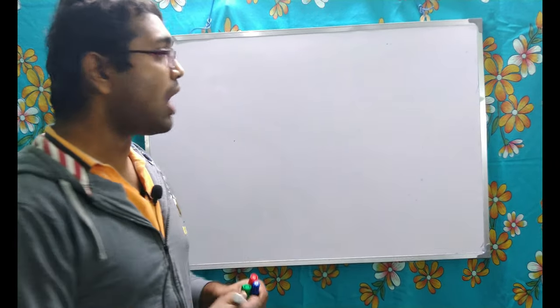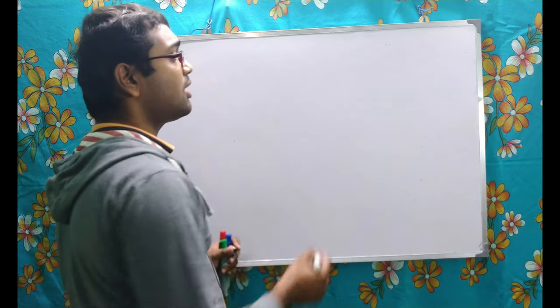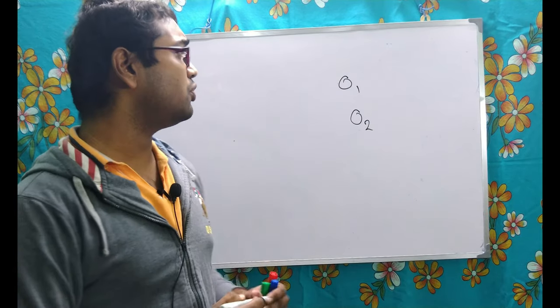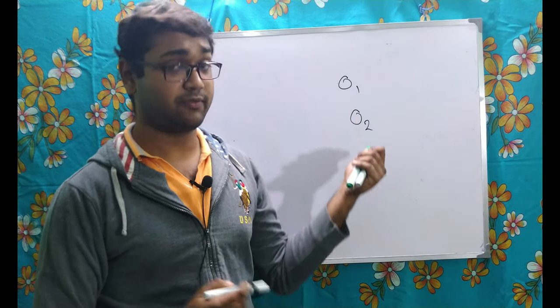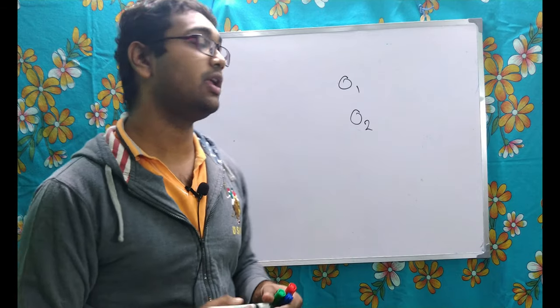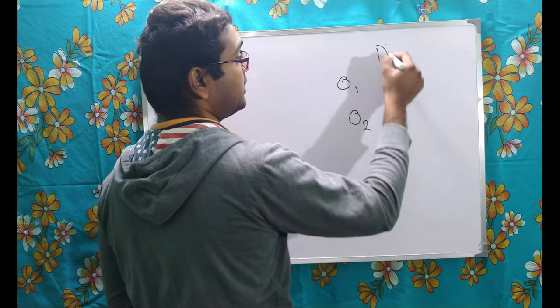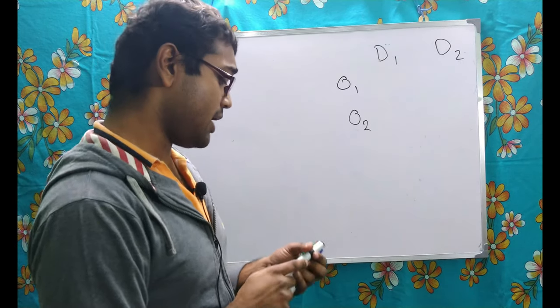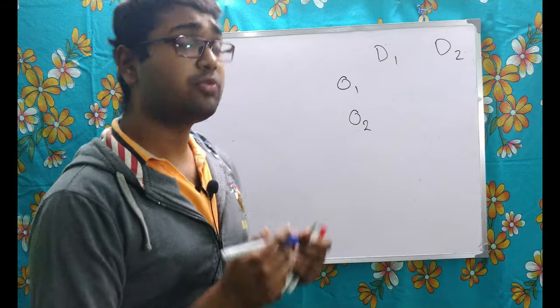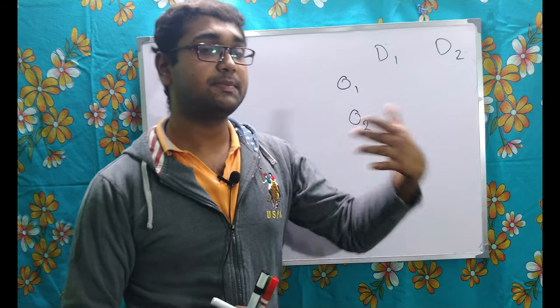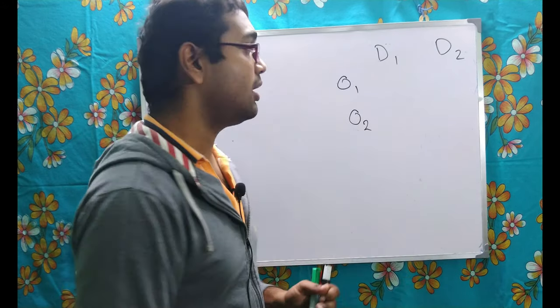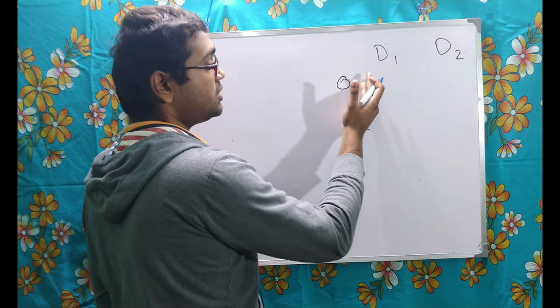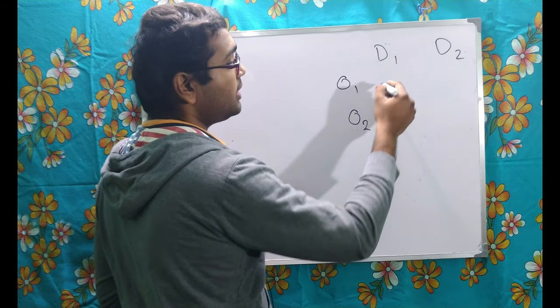Like one particular problem I can say, suppose I have two origins, origin 1 and origin 2. Suppose there are two factories, origin 1 is the first factory, origin 2 is the second factory, and I have two destinations, let the destinations be d1 and d2. I just assume that I require a few transportation cost, I mean some money is been spent on transportation.